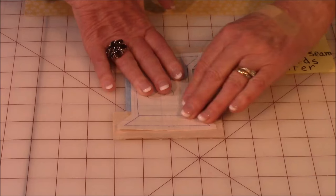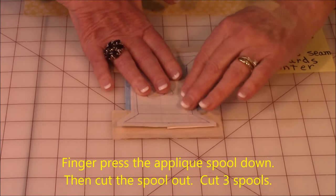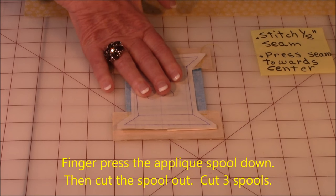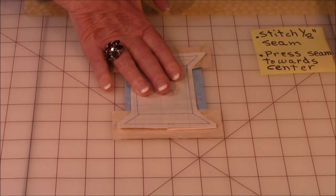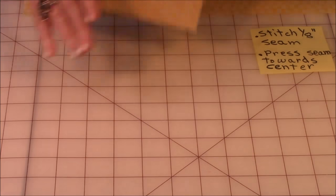Then cut out along your trace lines with some scissors. So cut out all three spools.